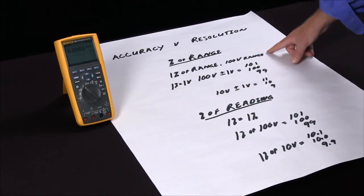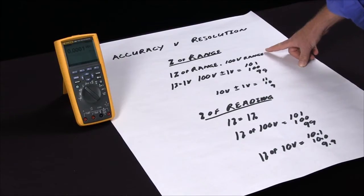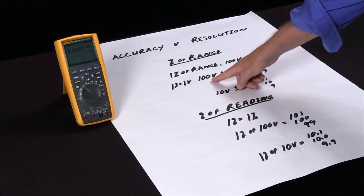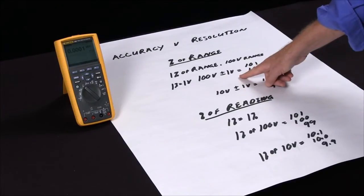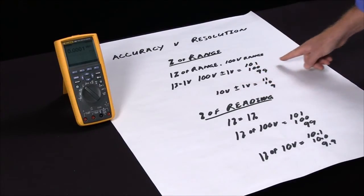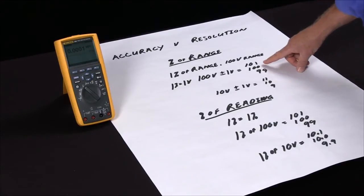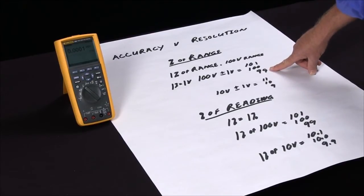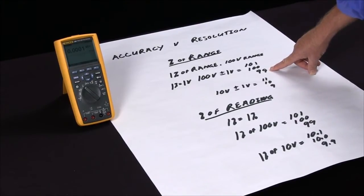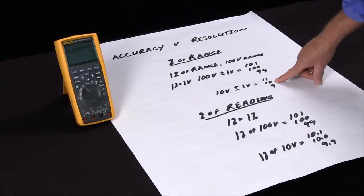For percent of range, if we have a one percent specification of range and we're on a hundred volt range, one percent of a hundred volts is one volt. So that means with a reading of a hundred volts, that can be within specification at plus or minus one volt. So a reading between one hundred and one and ninety-nine is actually a good reading on this meter. But if we're measuring ten volts on this same meter...